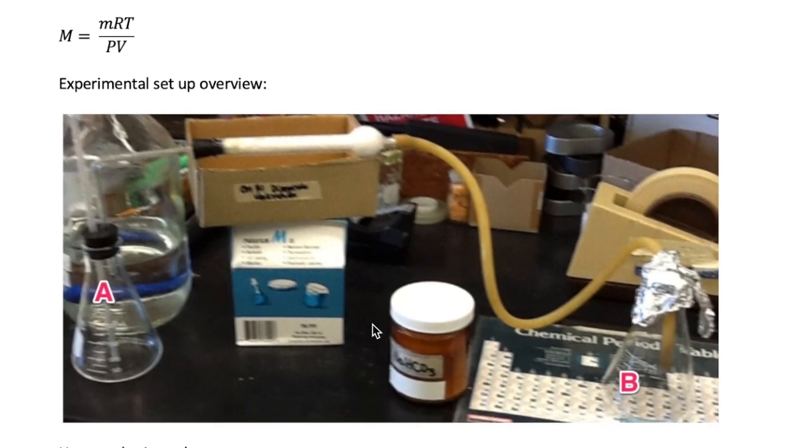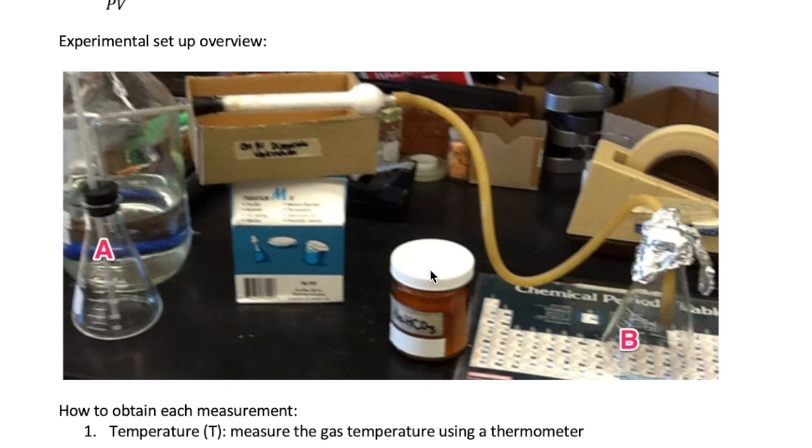Let's start with a brief overview of the experimental setup. You will carry out a reaction to produce your CO2 in the flask labeled A here, and you will collect the CO2 gas in the flask labeled B. Later I will discuss what all the different parts are, but right now I just want you to understand that the gas will be collected in an Erlenmeyer flask.